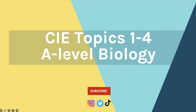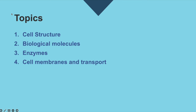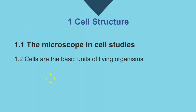Let's jump into all the information you need to know for Cambridge International A-Level for topics one to four. We're going to go through cell structure, biological molecules, enzymes, and cell membranes and transport. Starting with cell structure, which is split into two subsections: the microscope and cell studies, and cells as the basic units of living organisms.